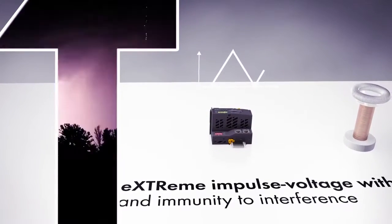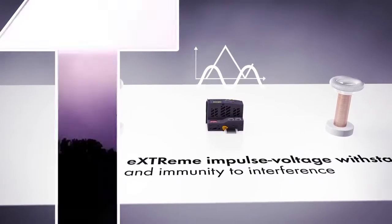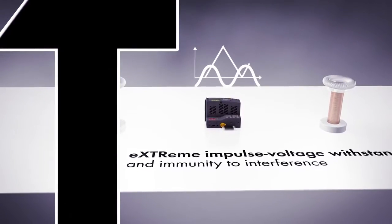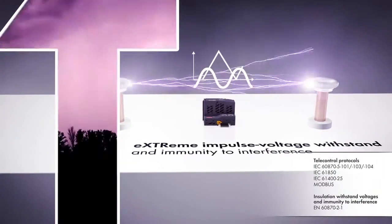The WAGO I.O. System 750 XTR provides higher insulation withstand up to 5 kV impulse voltage, lower EMC emission of interference, and higher insensitivity against EMC interference. This guarantees successful communication.